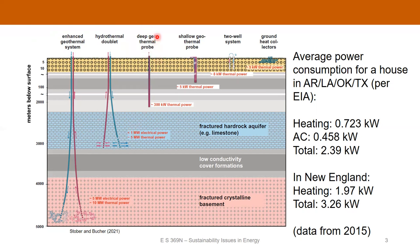A little bit shallower, deep geothermal probes at several hundred meters to maybe a kilometer give you hundreds of kilowatts of power. Then we get to the shallow systems — shallow geothermal probes at a couple hundred meters, two-well systems at 10–20 meters, and ground heat collectors right below the surface. Thinking about a typical house using EIA figures: in the South Central US — Arkansas, Louisiana, Oklahoma, and Texas — heating power consumption is about 723 watts and air conditioning is about 458 watts.